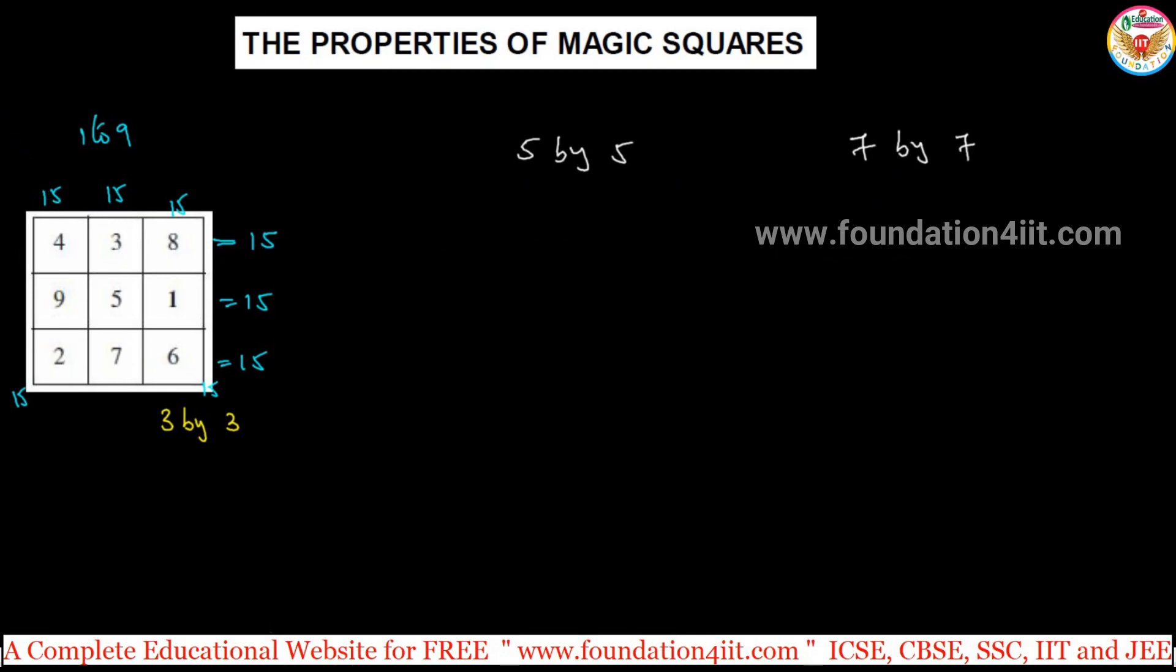Let us see the steps first. First one, number of rows and columns will always be equal and always be odd number. Only 3 rows, 3 columns, 5 rows, 5 columns, 7 rows, 7 columns. Number of rows and number of columns should be equal and that should be odd number.